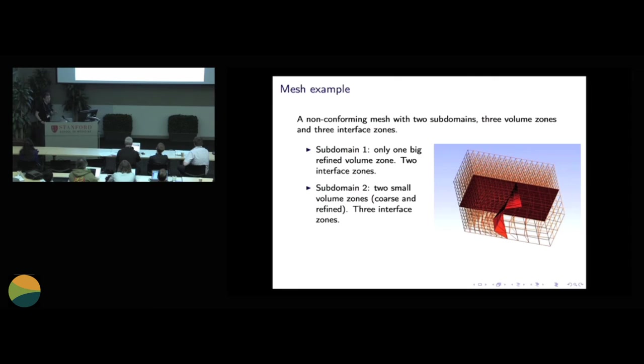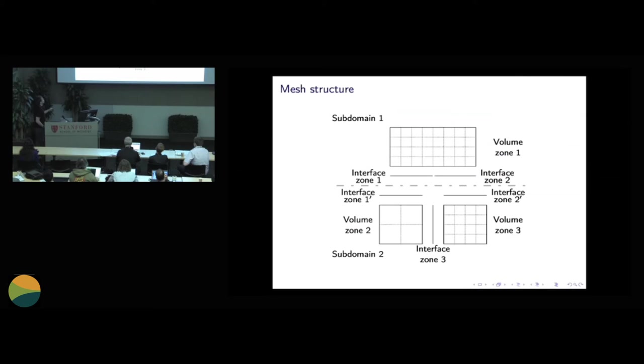And you allow to have non-conformity between zones. So here you have an example of such meshes. So it's a simple mesh, but you have an example. So you have one subdomain here with a fine grid behind. And in the front you have one subdomain with two volume zones. And all these zones are separated by three interface zones. And here you see that you can have stretched exahedrons.